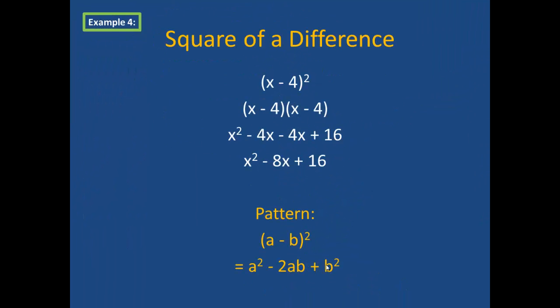The next rule is similar. This is the square of a difference. Instead of adding two terms to form a binomial, I am subtracting, such as x minus 4 in parentheses squared. This is just another way to write x minus 4 times x minus 4. So if I were to use FOIL or distributive, I get x times x is x squared, x times negative 4 is negative 4x, negative 4 times x is also negative 4x, and negative 4 times negative 4 is a positive 16. So my final product would be x squared minus 8x plus 16.